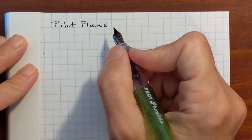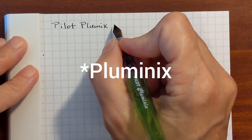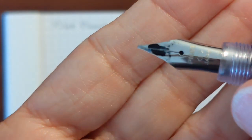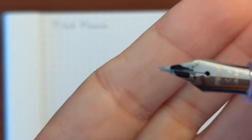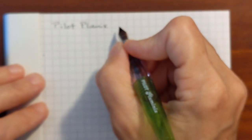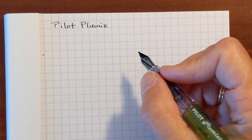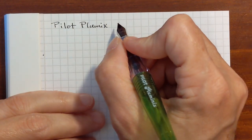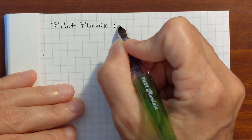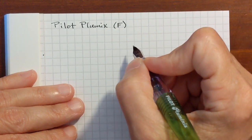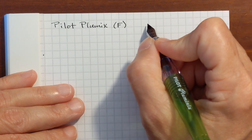You notice with this you've got to hold it at the right angle or it will dig into the paper. The edges didn't seem too pointy but you do have to hold it at the right angle. It's marked fine but it's like a cursive fine.